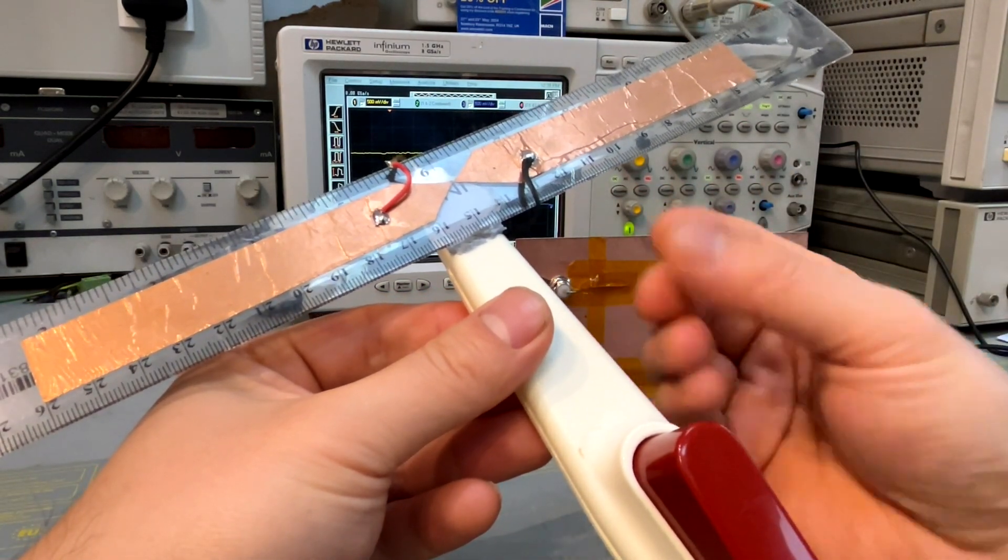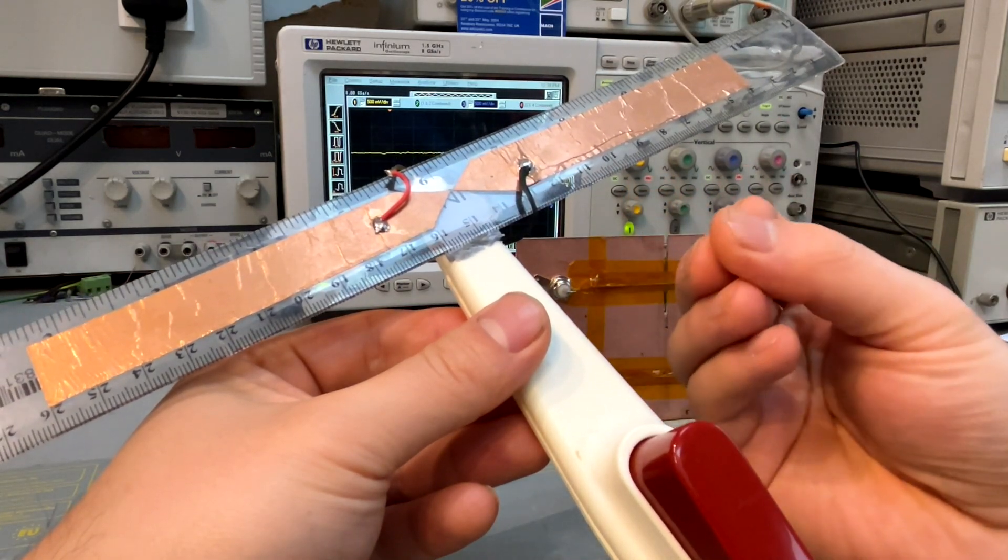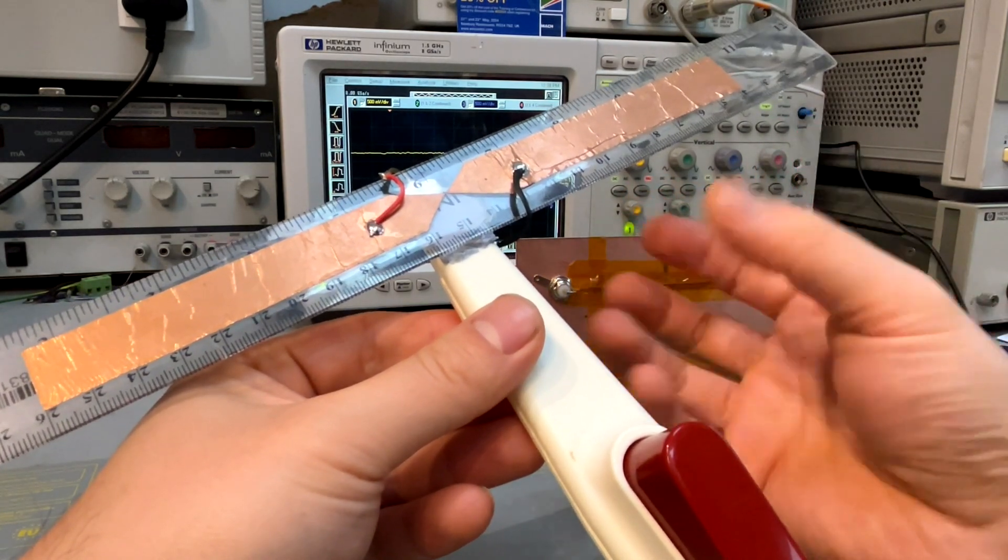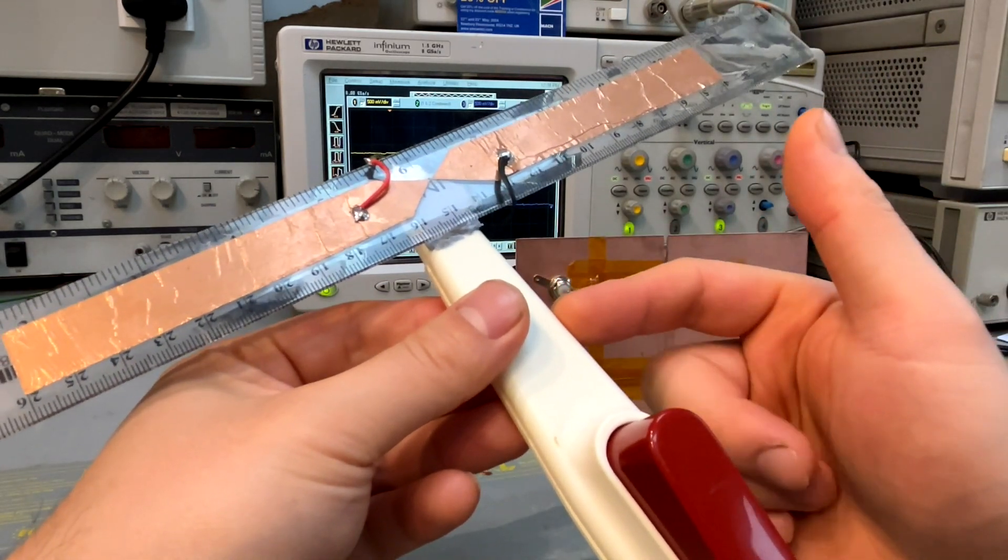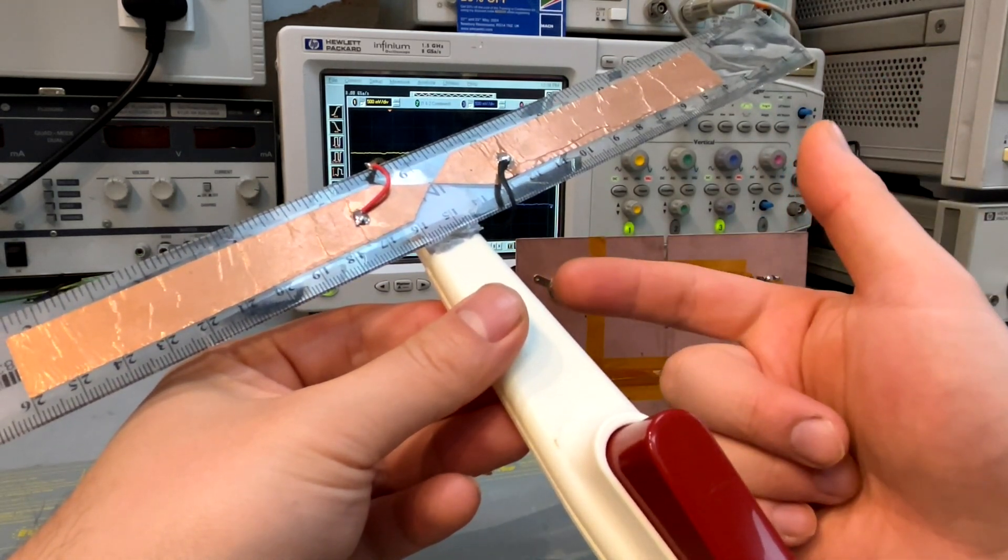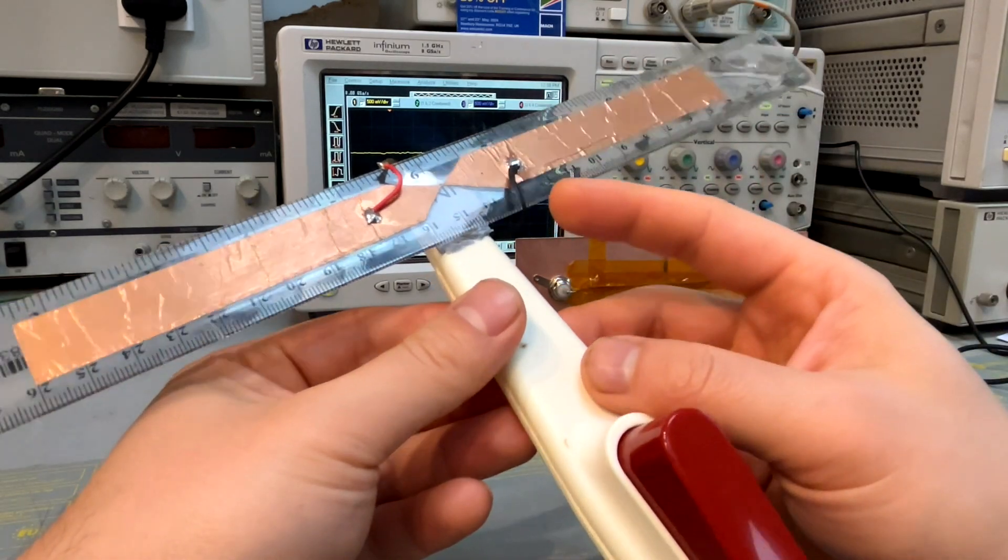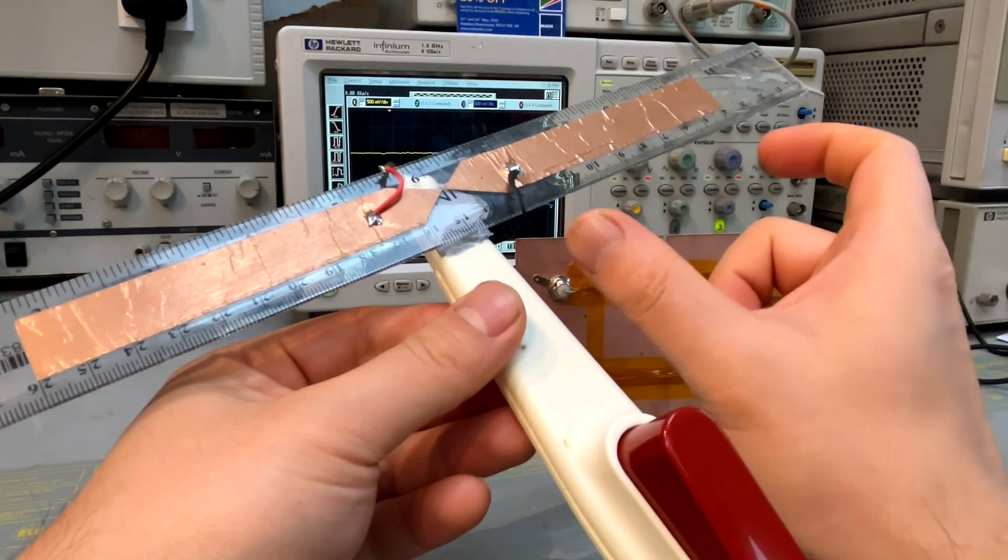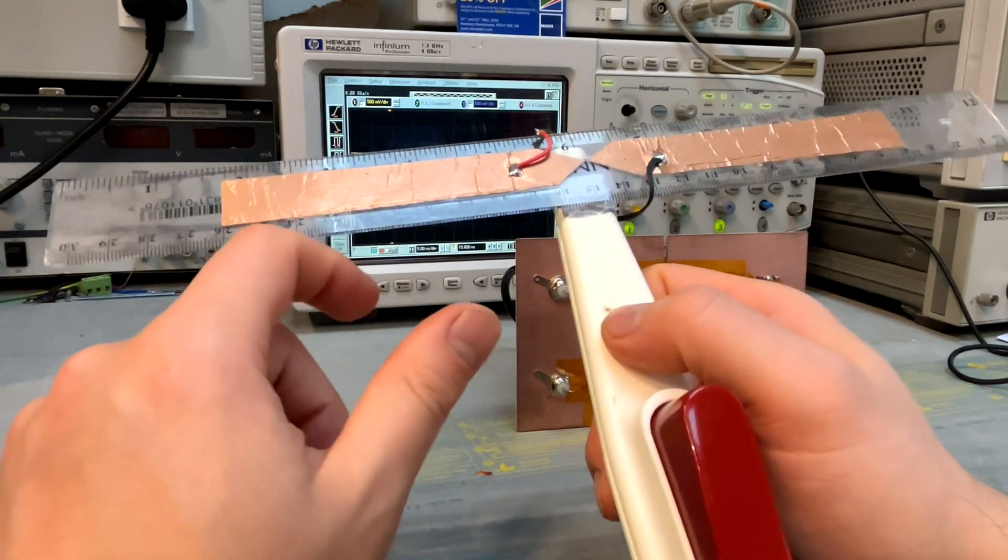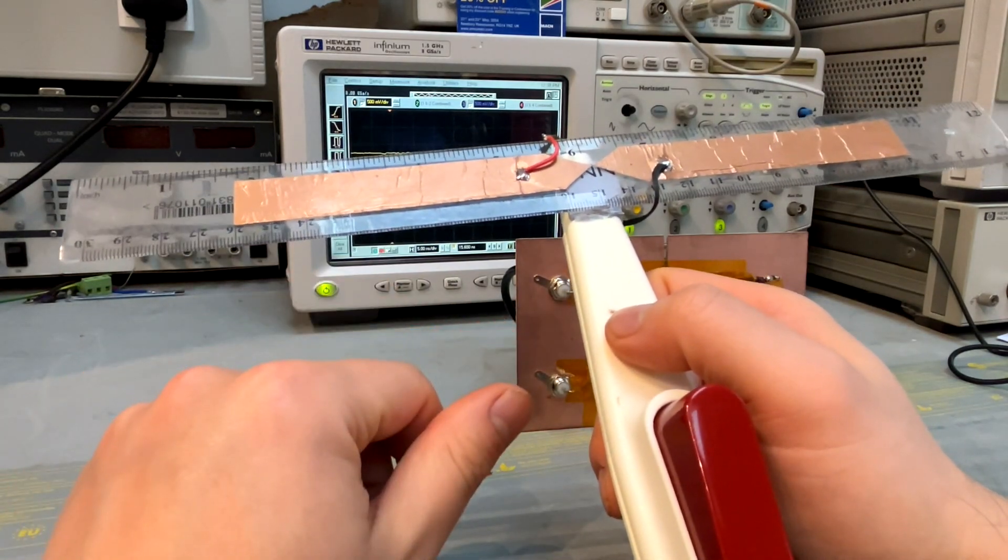And this really simulates what we call an indirect ESD event. Why indirect? Because you can treat this as an ESD simulator. But because of the length of the copper, as we explained, this is almost like a perfect dipole half wavelength antenna.